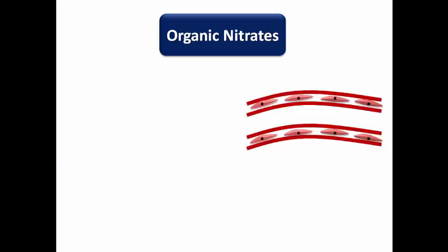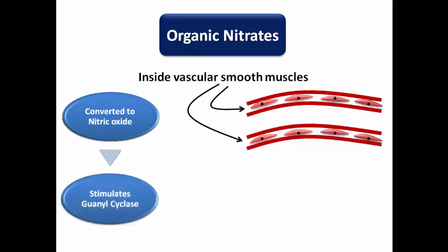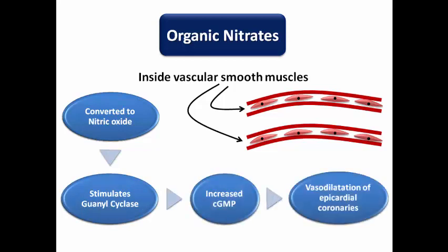How do nitrates produce their pharmacological effects? They are converted inside the vascular smooth muscle cells into nitric oxide, which stimulates guanylate cyclase, increasing cyclic GMP levels, resulting in vasodilation of the epicardial coronaries. This helps redistribute coronary blood flow to the ischemic area, relieving anginal episodes and making nitrates useful as maintenance therapy to prevent or reduce their recurrence.